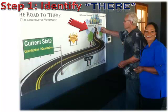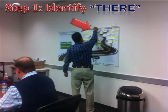You'll use the sticky note mind mapping pieces that come in your toolkit to identify what your 'there' looks like, as it pertains to performance and productivity, the culture and environment you desire, partnerships and relationships that leverage your outcomes, and the level of profitability or measurables based on your type of organization. Once all the ideas have been exhausted, group the sticky notes together by themes and eliminate the duplicates.